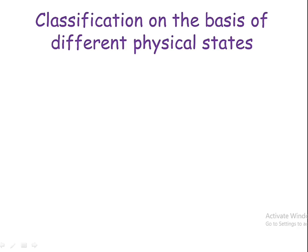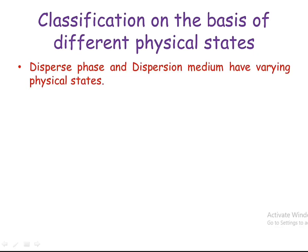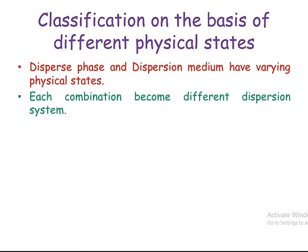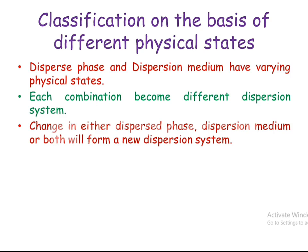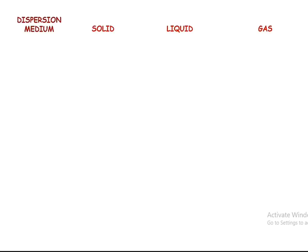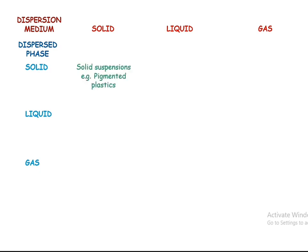When we classify on the basis of physical state, the dispersed phase and dispersion medium of the system can have varying or different states of matter. Each combination of different physical states forms a new dispersion system. Dispersion medium can be either a solid, liquid, or gas. Similarly, the dispersed phase can also be either a solid, liquid, or gas.